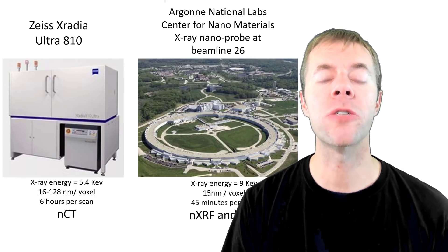Now, we're going to use these two pieces of equipment. One is a lab scale instrument from Zeiss, the Ultra 810, and one is a synchrotron. Most of this work's been done at beamline 26 at Argonne National Lab. In both these systems, we can image at about 20 nanometers. That's about a thousand times smaller than a human hair.